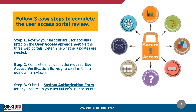Step two must be completed by all institutions regardless of any issues, errors, or updates identified during the review process. Step three: submit a system authorization form if you identified any changes or updates that may be needed to your institution's user accounts.